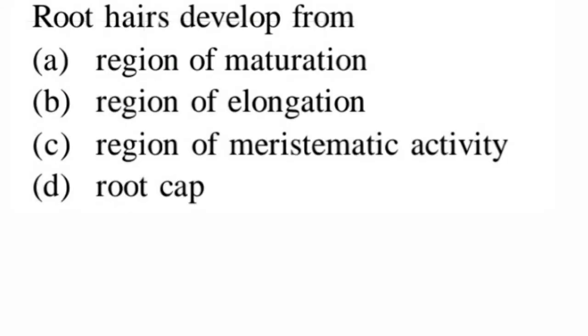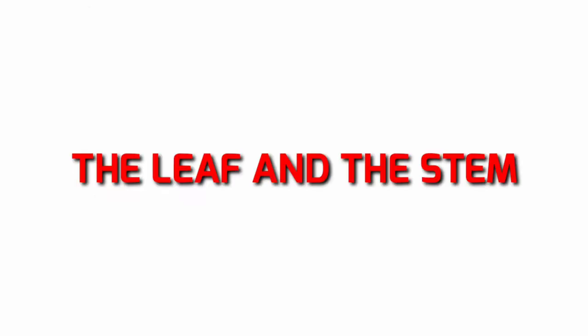Next question: root hairs develop from — we know in the root there are three regions. The first is the region of maturation, where root hairs are present, which is really helpful in absorption of water and minerals from the soil. So option A, region of maturation, is the correct answer. Let us now move to the next two concepts: the leaf and the stem.